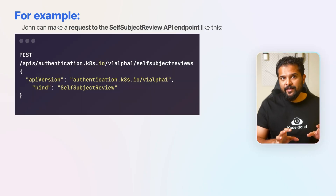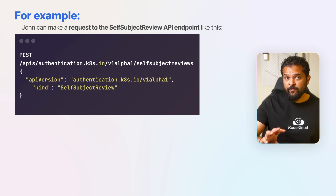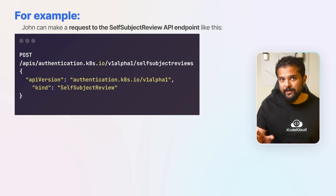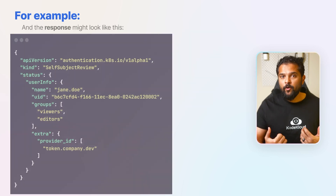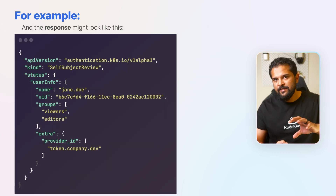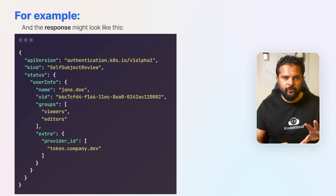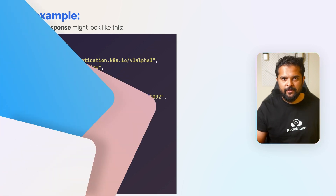The user John can make a request to the self-subject review API endpoint by sending a POST request to the API. The response will show the groups that he belongs to — in this case, viewers and editors.